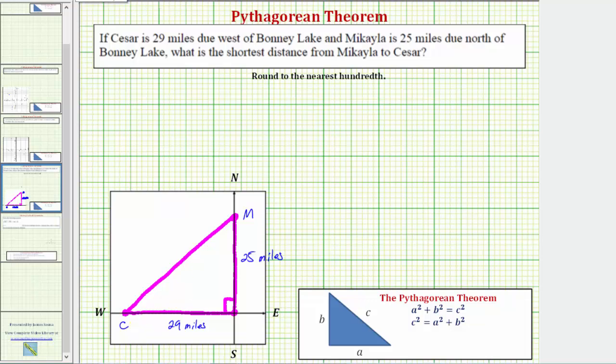The Pythagorean Theorem is a squared plus b squared equals c squared, or c squared equals a squared plus b squared. Where c must be the length of the hypotenuse, which is the longest side of the right triangle. It's also the side opposite the right angle. And a and b are the lengths of the two legs, where the legs form the right angle.